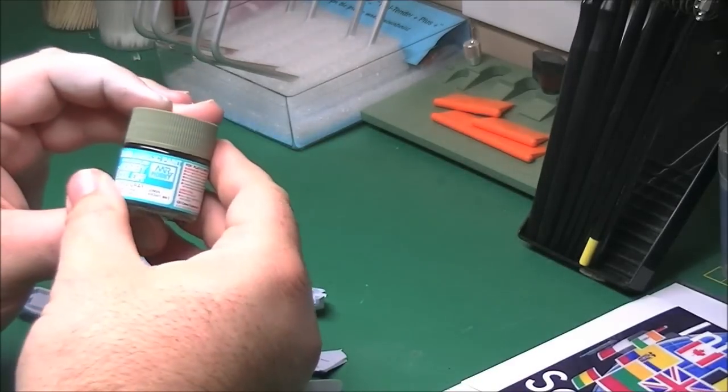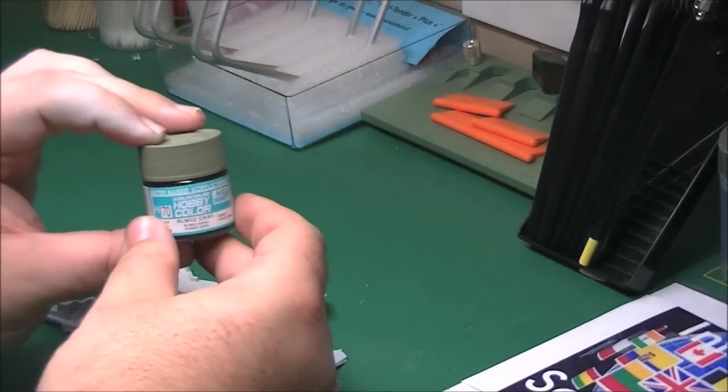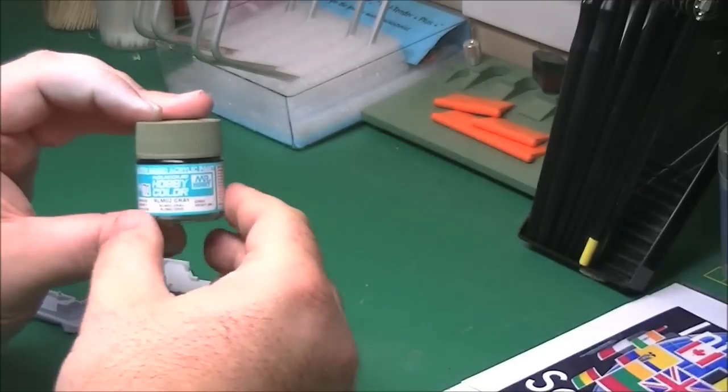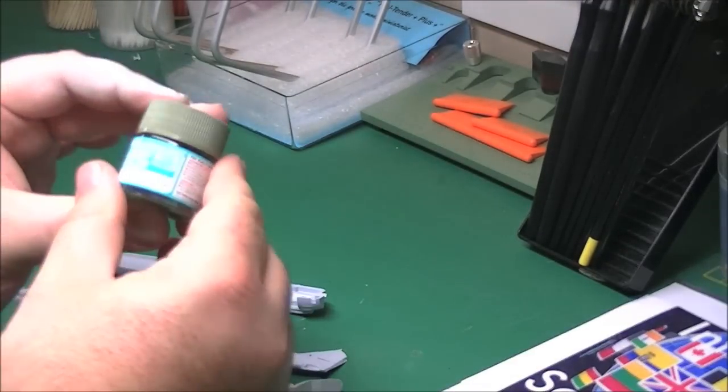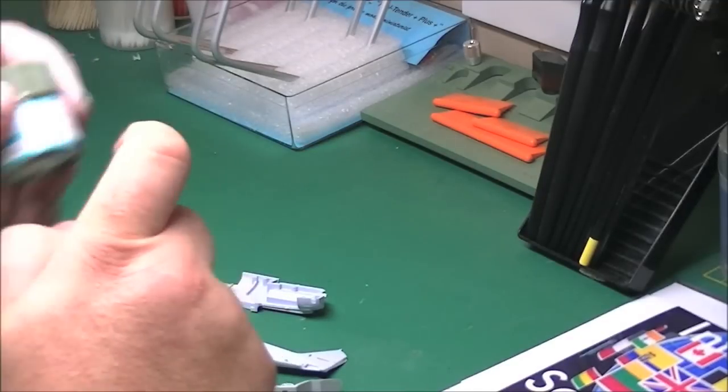And all the 109Es of this era are RLM02. So first again, I'm probably going to spray the entire aircraft in Mr. Hobby. See how it goes down. See what the colour matches are like with other ones I've sprayed before. And we'll just see how it goes, basically. So that's what we're going to be using.